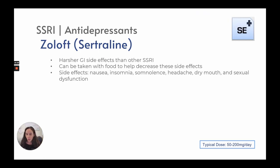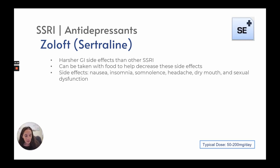Zoloft, or sertraline, has harsher GI side effects than other SSRIs, but can be taken with food to reduce them. Side effects include nausea, insomnia, somnolence, headache, dry mouth, and sexual dysfunction. Typical dose is 50 to 200 milligrams a day.